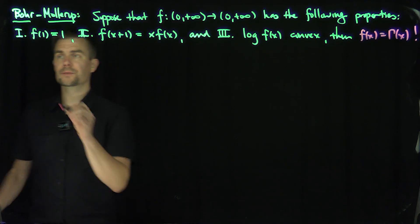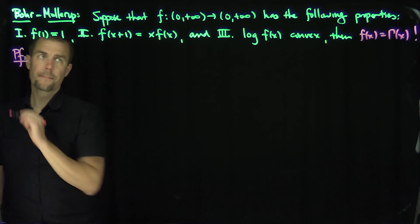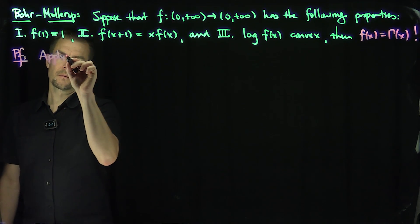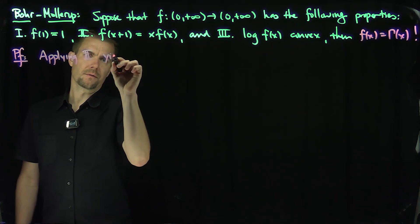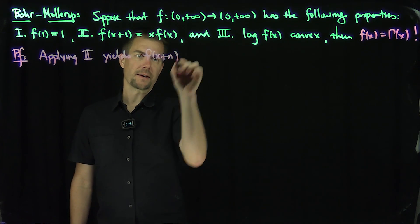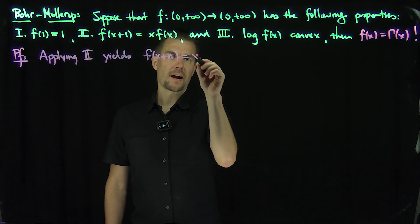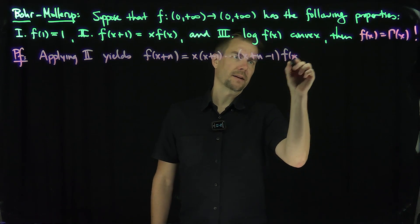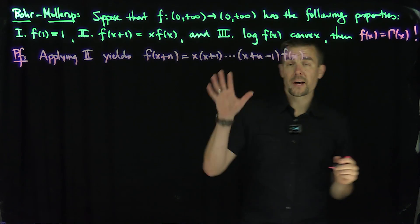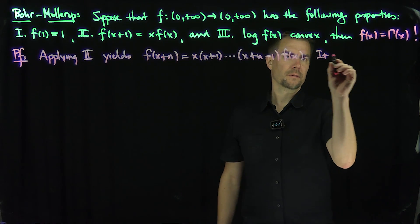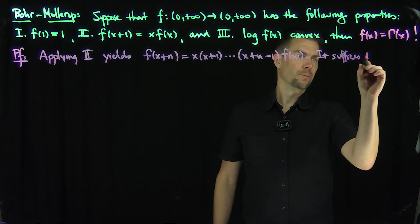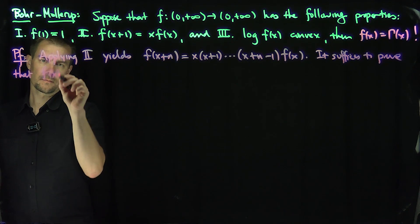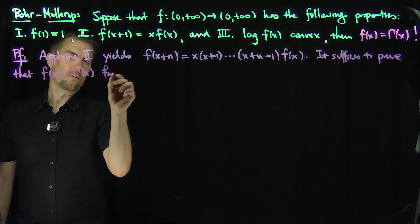So how does the proof go? The proof starts as follows. Since we can apply property 2 over and over again, applying property 2 yields that f(x+n) for any natural number n is going to be x · (x+1) · ... · (x+n−1) · f(x). Since this is true, it suffices to prove that f(x) = Γ(x) for x between 0 and 1.